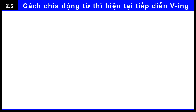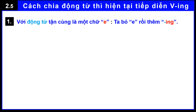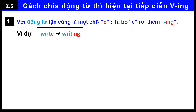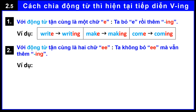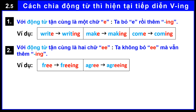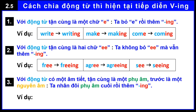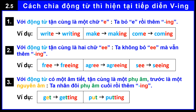Present continuous tense verb conjugation. Rule 1 — for example: write → writing, make → making, come → coming. Rule 2 — for example: free → freeing, agree → agreeing, see → seeing. Rule 3 — for example: get → getting, put → putting, run → running.